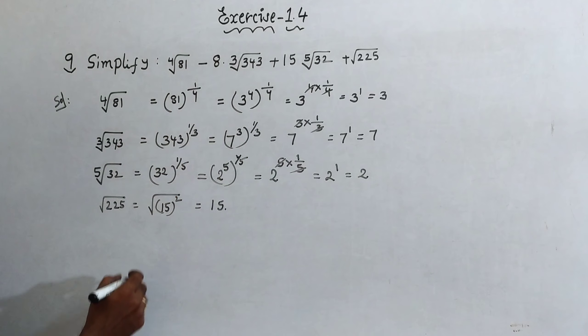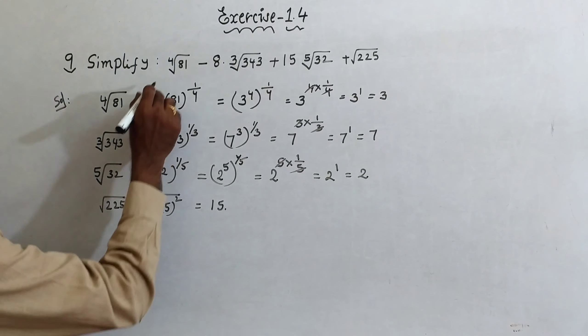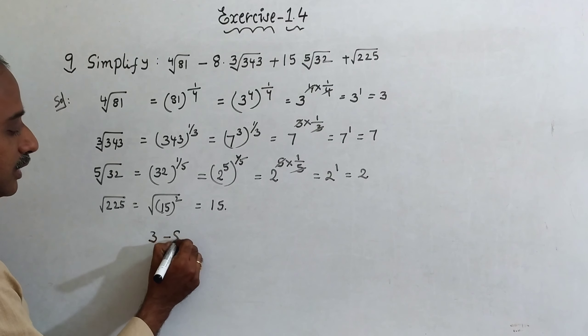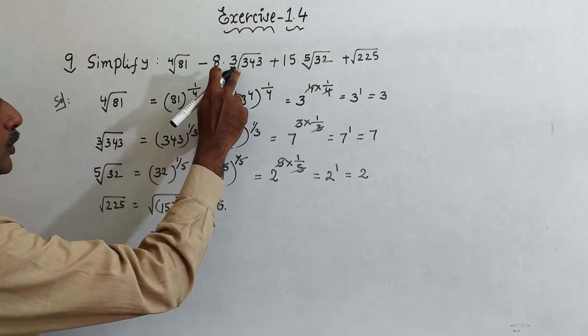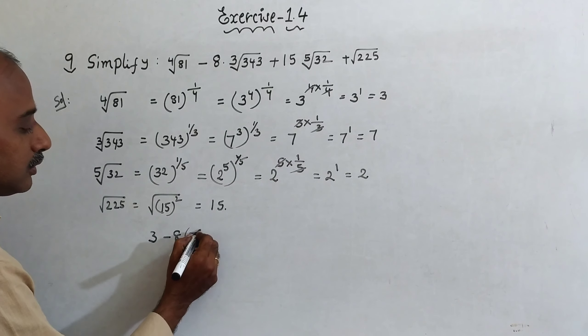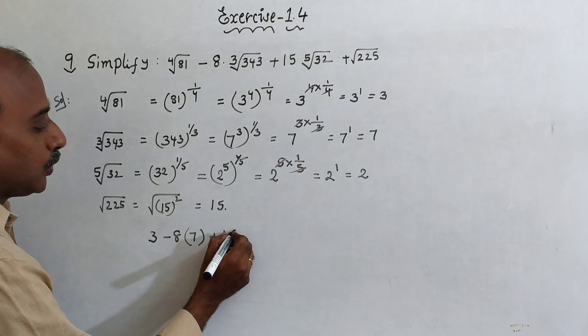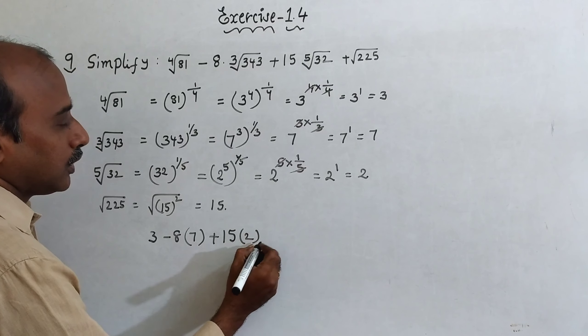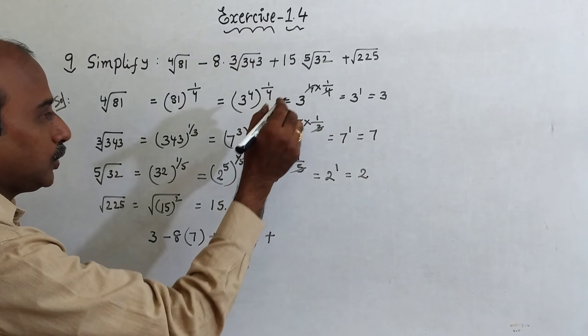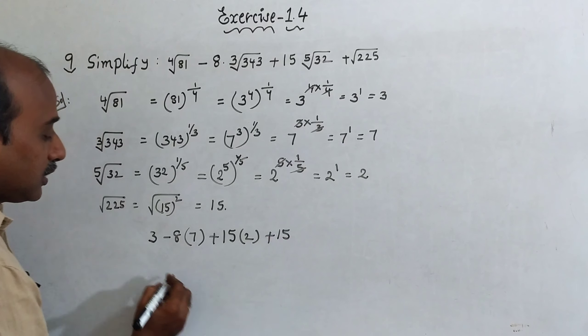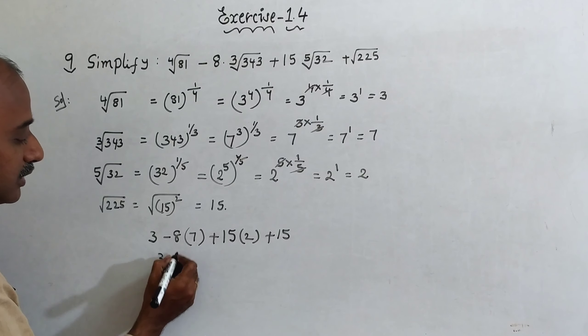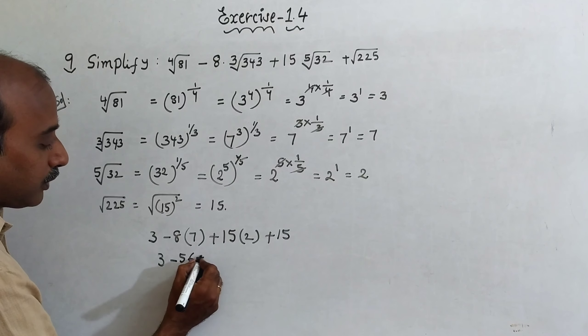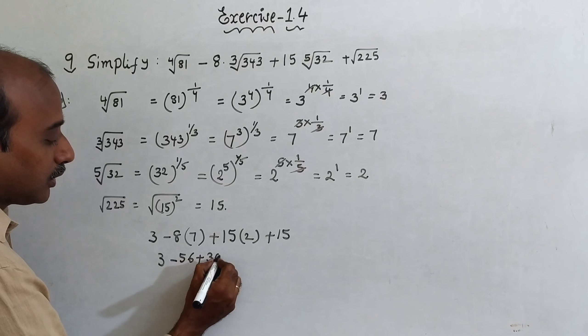Now, take it as a whole problem. Fourth root 81, what we got: 3, minus 8 of cube root of 343, we got 7, plus 15 into 5th root of 32, we got 2, plus under root of 225 is 15. This is nothing but 3 minus 8 times 7 is 56, plus 15 times 2 is 30, plus 15.